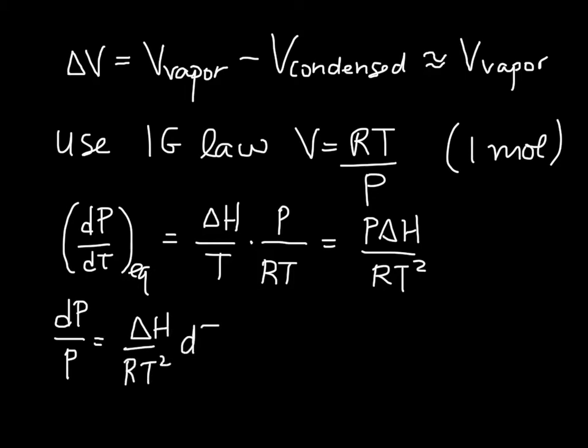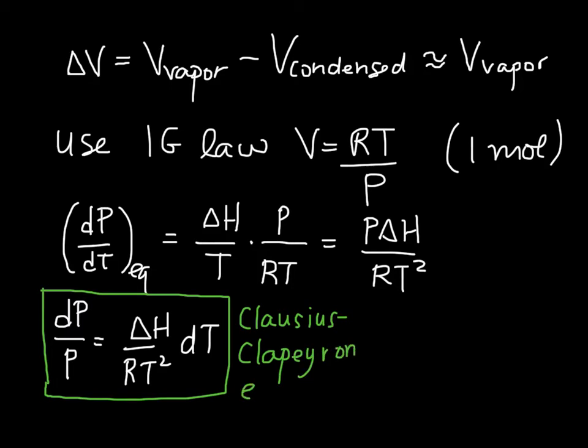So, this equation here is sometimes known as the Clausius-Clapeyron equation, and keep in mind that it only applies for equilibrium between the condensed and the vapor phase. It is sometimes written in this mathematically equivalent way, which says d(ln P) is equal to delta H over RT squared dT. And we'll see in a minute why this is sometimes mathematically more convenient. If you were to integrate this side, you would get ln of P, so you can sort of write this as d(ln P).